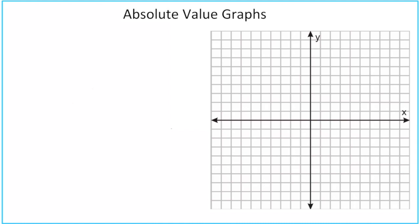Now it's time to take notes on the format of absolute value graphs. The basic equation is y equals a times the absolute value of x minus h, plus k. This should look familiar — it looks a lot like vertex form used for graphing parabolas. There's also a vertex for an absolute value graph: it's the bottom of the V, or the top of the upside-down V. Just like vertex form for parabolas, the vertex is simply (h, k). You get that by taking the opposite of what's inside the absolute value and not changing the number on the outside.